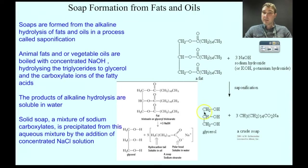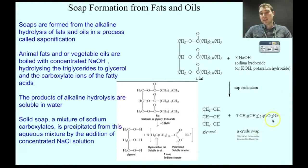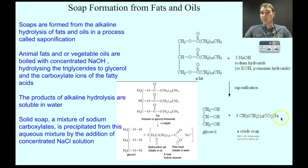What happens is you produce glycerol — propane-1,2,3-triol — and you get soap. That is the long carbon chain with the carboxylate head. In this case we're using sodium hydroxide; you add salt to the mixture and you get your solid salt precipitating out.